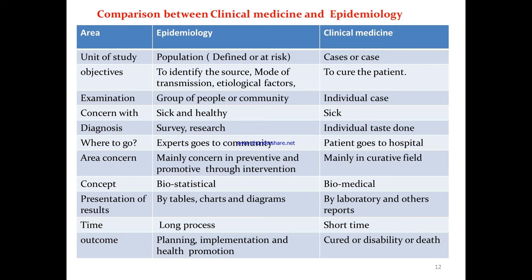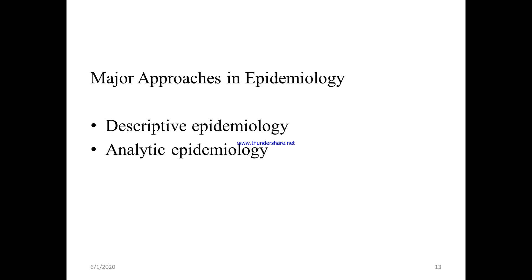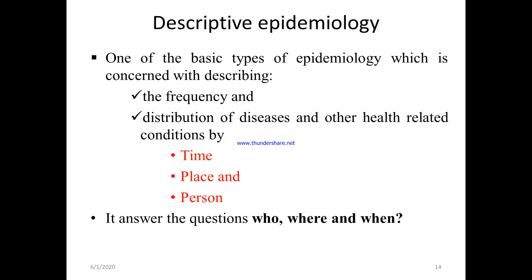This is the comparison between clinical medicine and epidemiology — observe the differences between the two fields. The major approaches in epidemiology are descriptive epidemiology and analytical epidemiology. As the name implies, descriptive epidemiology describes based on frequency and distribution of disease in terms of time, place, and person — answering who, where, and when.